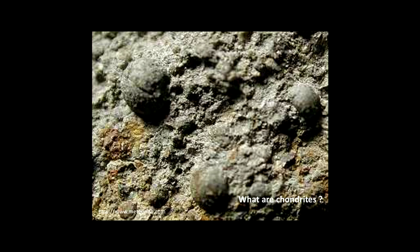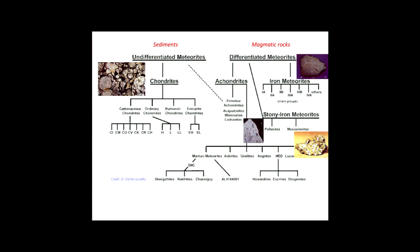Now a brief overview of chondrites to make clear what they are. The classification of meteorites is simple: you can divide them between magmatic rocks and 'sediments.' The sediments are the primitive meteorites — slightly counter-intuitive, since the primitive rocks are the sedimentary ones and the differentiated rocks are the magmatic ones. Chondrites are the primitive meteorites, divided into different classes based on composition and isotopic composition: carbonaceous chondrites, ordinary chondrites, and enstatite chondrites.